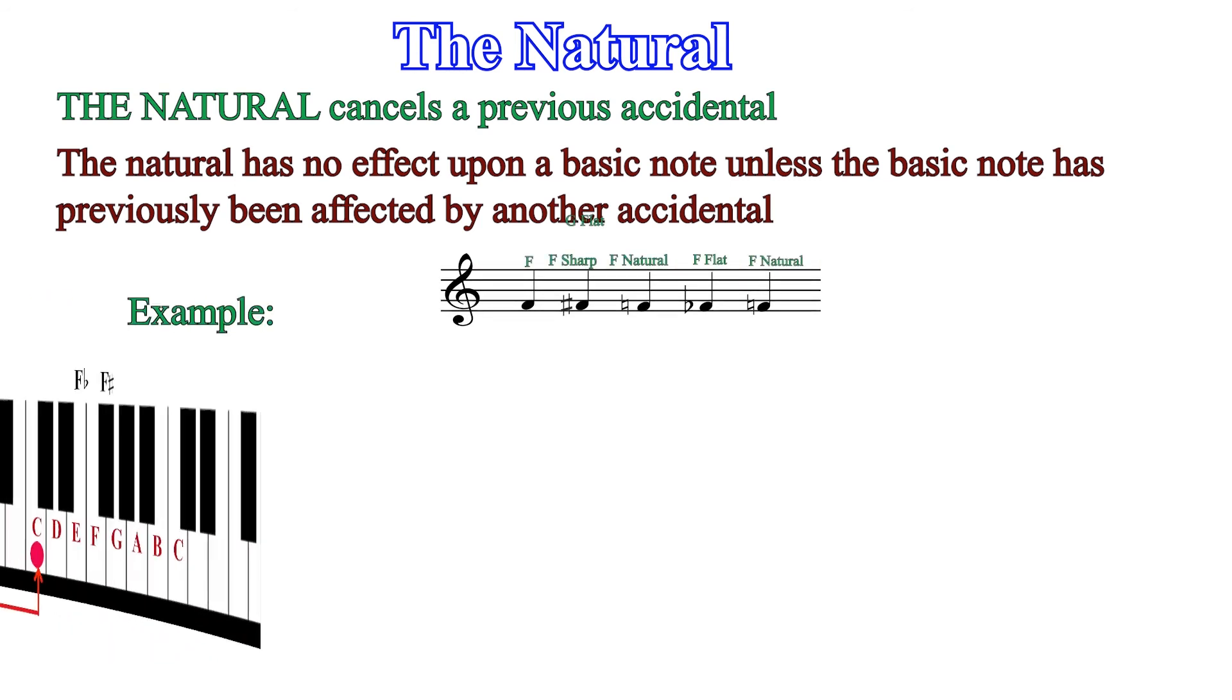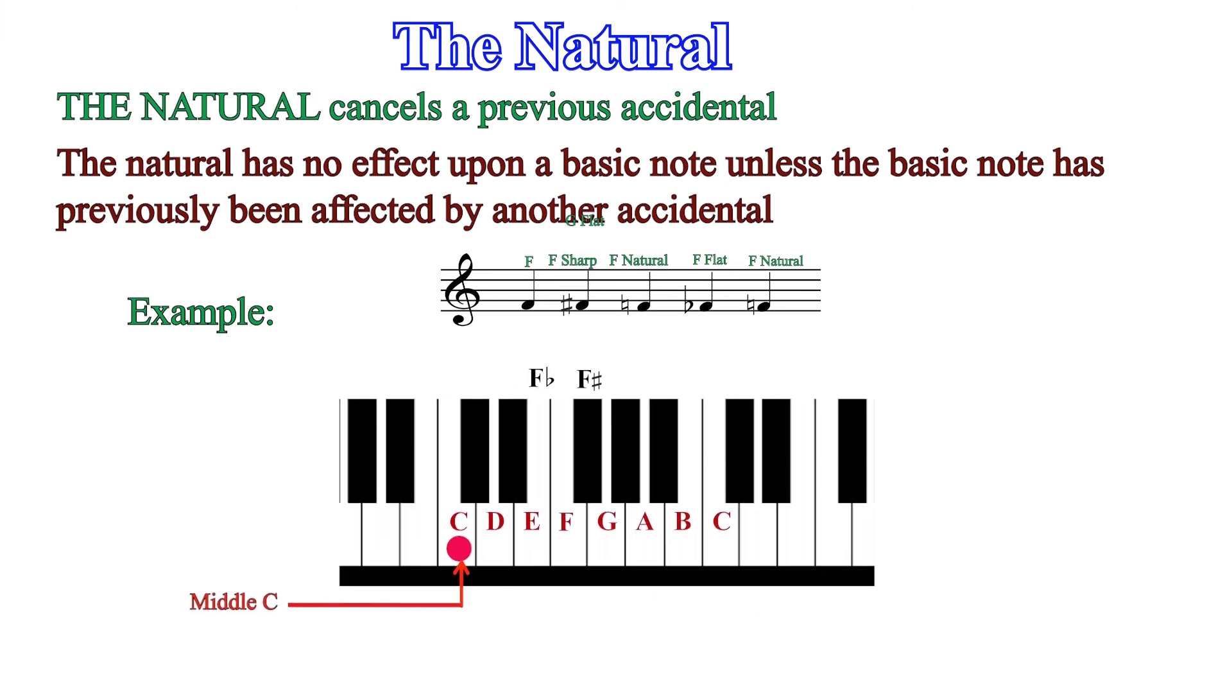In the example shown, the first note on this staff is F. When F is sharpened, it becomes a black key in front of F as shown. That is F sharp. When F is naturalized back, it comes back to its original position as a white key.